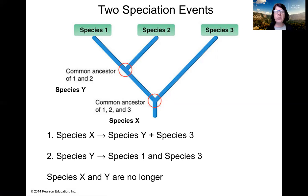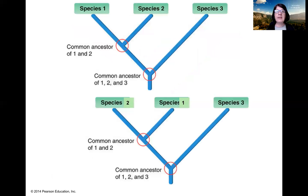These three species have resulted from two sequential speciation events. Because this is what the model tells us — two speciation events — we can draw the model in a slightly different way without altering the essential information. For instance, instead of writing species one on the left and species two on the right, I could write two on the left and one on the right — so I could flip these two branches.